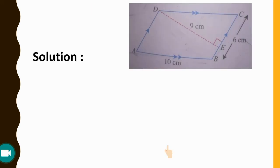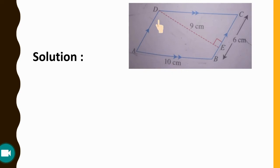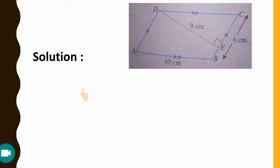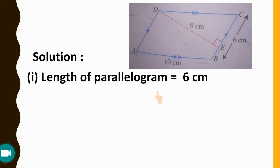Solution: As we know, the area of a parallelogram equals base multiplied by height. We will consider DE as the height and BC as the base. We could also consider AB as the base with the corresponding height, but here we consider BC as the base and DE as the height, because the height must be the perpendicular distance from the base to the opposite side.